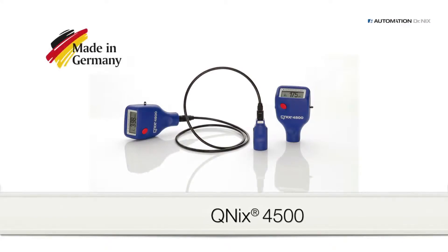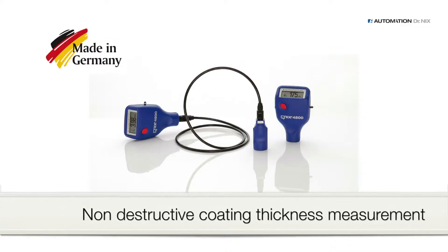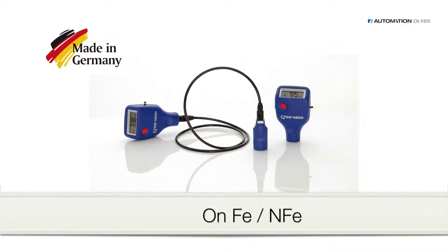QNIX 4500, one of the best-selling coating thickness measuring gauges worldwide. Accurate measurements on metal surfaces made easy, whether it's iron or aluminum.